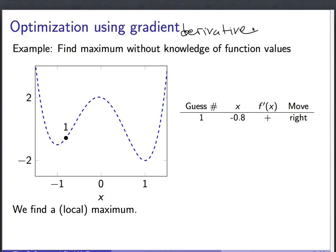I've given you a function, and we'd like to find the maximum without knowledge of the function values. If you knew the function, it should be easy to just make a graph and pick out the highest point. But that is not true if your function depends on 30 variables — you can't even plot that function. So you need some other way to find the maximum.